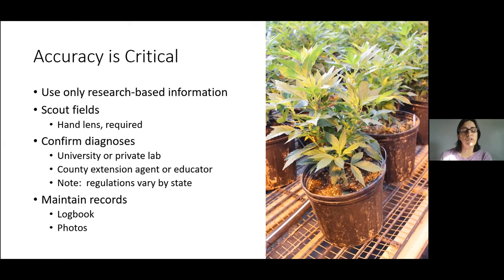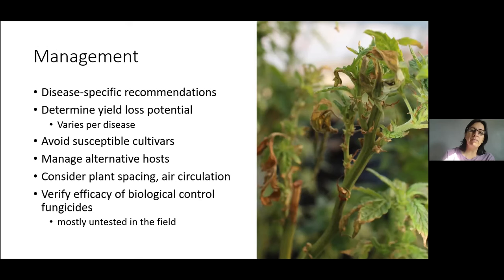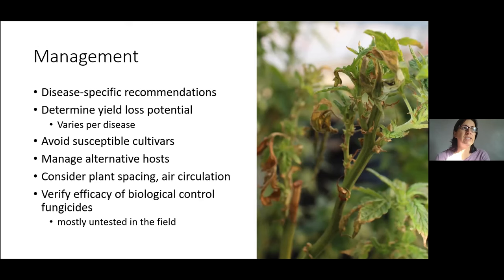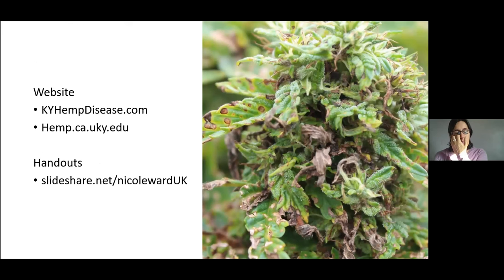Maintain records of when these diseases come in and which cultivars are affected — keep a log book and take photos along the way. In closing, disease-specific recommendations matter: it matters which disease you have if you're going to try to manage it, and sometimes management isn't always possible. There is cultivar susceptibility and some tolerance per cultivar. Alternative hosts like weeds really matter in a lot of these leaf spot diseases. Air circulation is important. We don't yet have reliable information on biocontrol or fungicides — we have some greenhouse studies but nothing yet in the field. We're working on all those things.